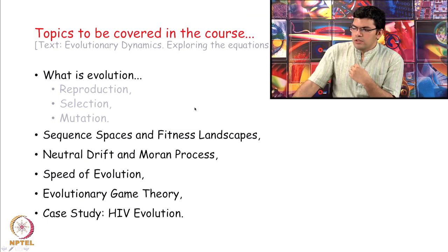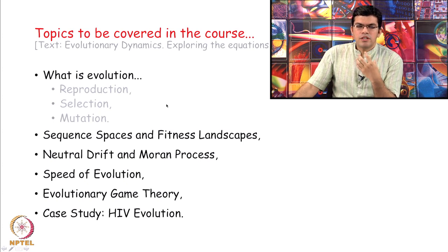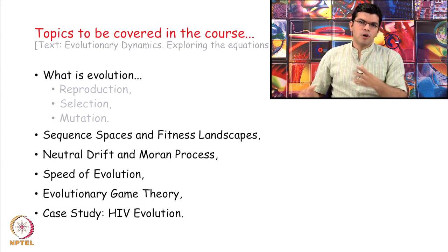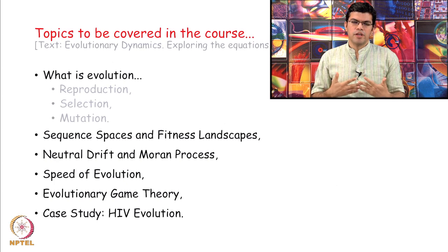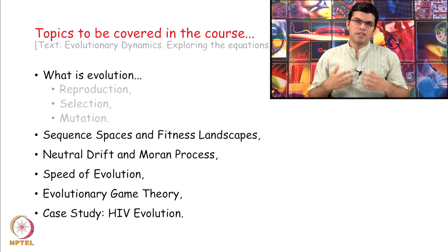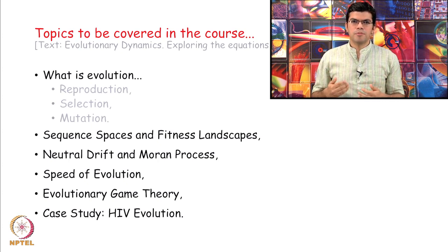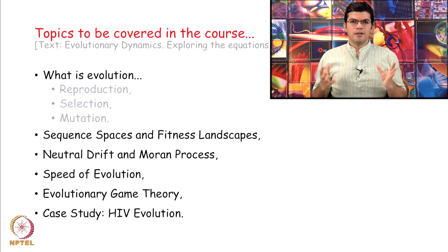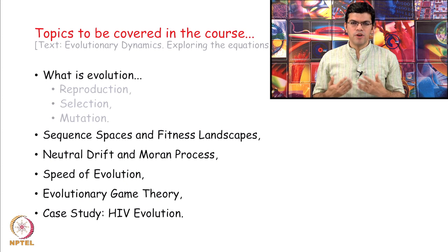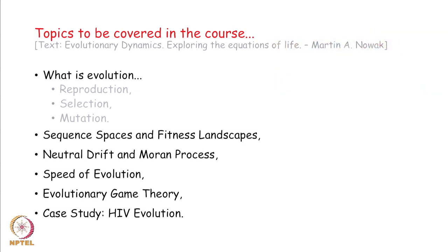In terms of how we plan to cover this course, we will start with what is evolution. Evolution is essentially three processes coming together: reproduction, selection, and mutation — all three operating together lead to a species evolving. We will start by developing equations that allow us to understand each of these three processes in a mathematical framework, and I do not want the biologists to get scared — the development of these equations will be very slow.